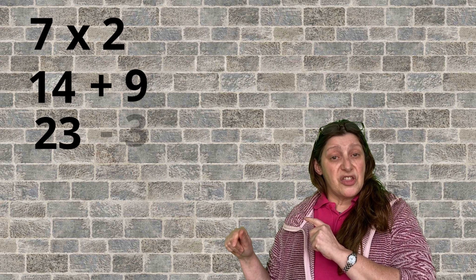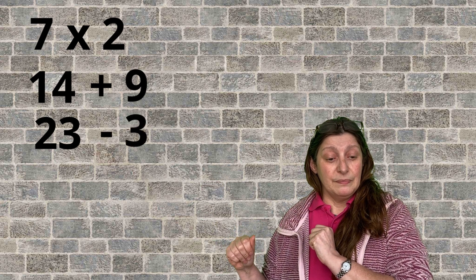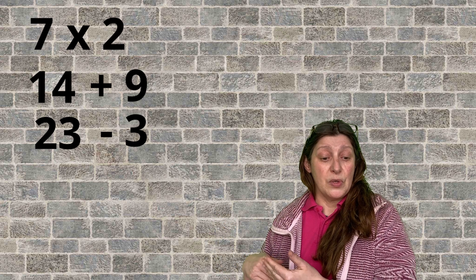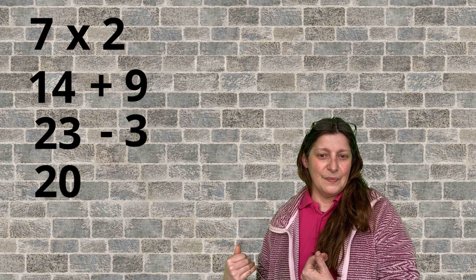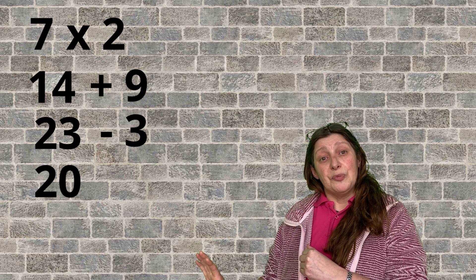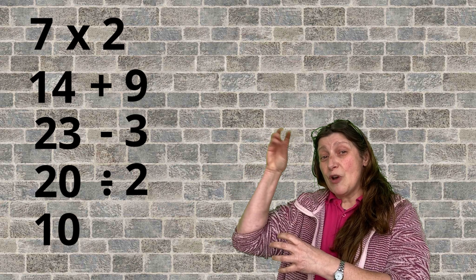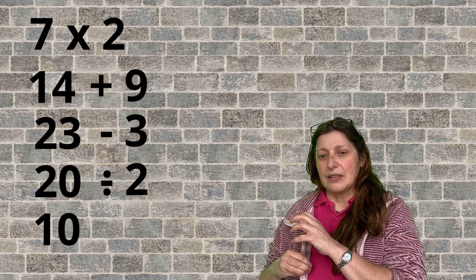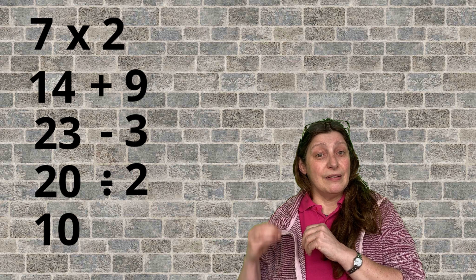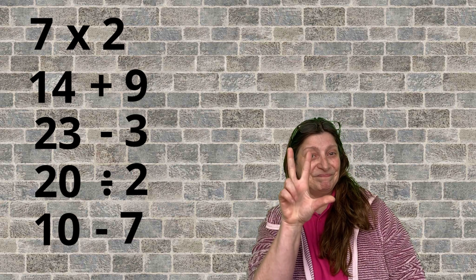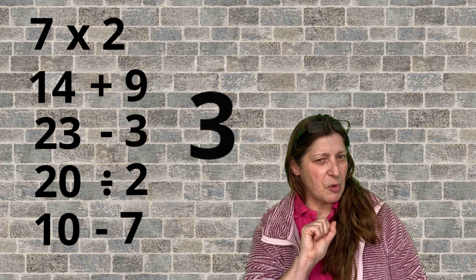Take away 3 from that number. So, 23 take away 3 is 20. Then divide by 2. 20 divided by 2 is 10. And now, you're going to take away your original number from that. So, 10 take away 7 is 3, if my number bonds are right.